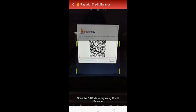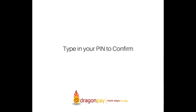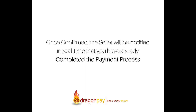Align the box on the mobile camera to scan the QR code on the screen. When the QR code is read by the mobile app, your prepaid credits will be immediately deducted with the amount that you have to pay. Once your payment is confirmed, the seller from which you purchased the items will be notified that you have completed the payment process in real time.